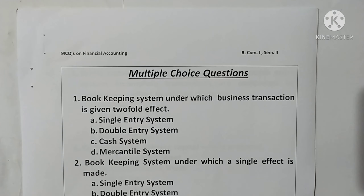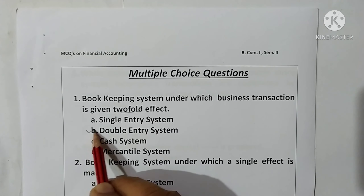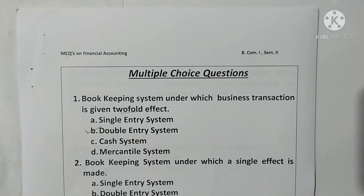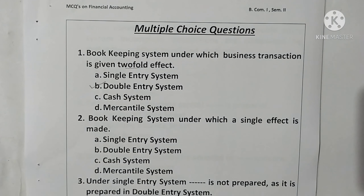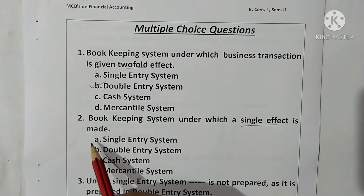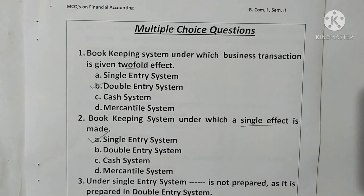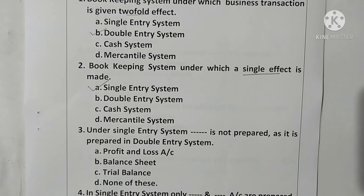Question 1: The bookkeeping system under which a business transaction is given a twofold effect — twofold effect means a double effect — option B is correct. Question 2: The bookkeeping system under which a single effect is made is called the single entry system; option A is correct.